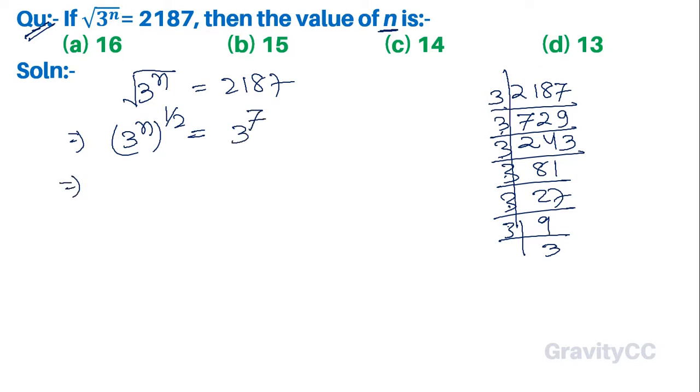This implies that 3 to the power n upon 2 is equal to 3 to the power 7. Here the bases are identical, so therefore n upon 2 is equal to 7. So n equals 7 into 2, which is 14. Answer.